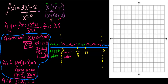For the region from negative one-third to 0, I choose x = negative 0.2. In the numerator, negative times positive is negative. In the denominator, positive times negative is negative. Negative over negative is positive, so the graph is above the x-axis in this region.